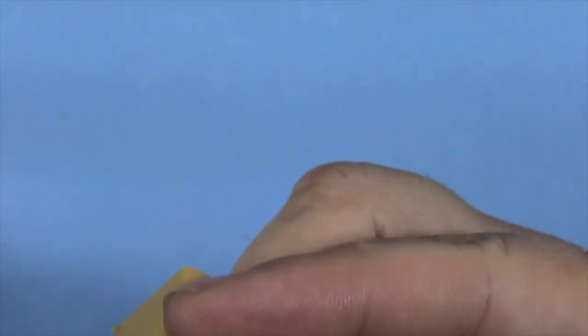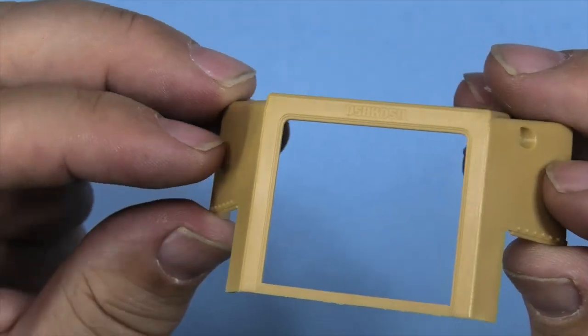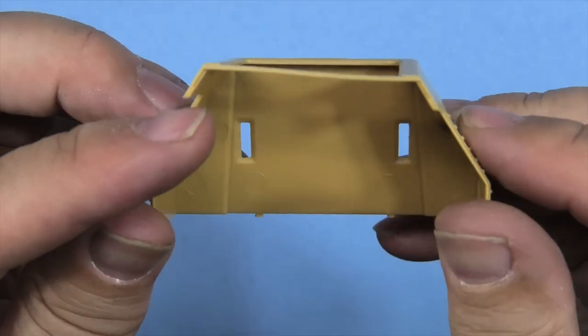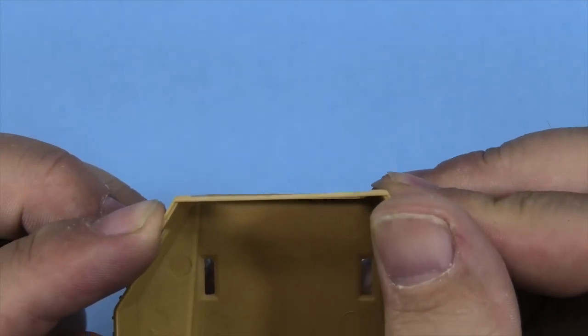Up here in the front it says Oshkosh. Once you get everything glued in place, it should straighten out. If not, just a little warm water, hot water, get it all straightened out.